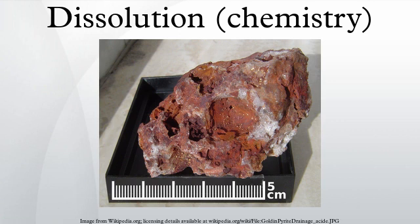That is, NaCl(s) ⇌ Na⁺(aq) + Cl⁻(aq). The solubility of ionic salts in water is generally determined by the degree of solvation of the ions by water molecules. Such coordination complexes occur by water donating spare electrons on the oxygen atom to the ion. The behavior of the system is characterized by the activity coefficients of the components in the solubility product.